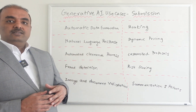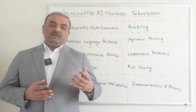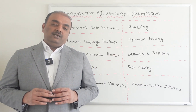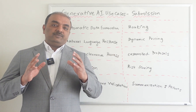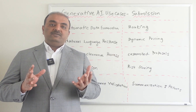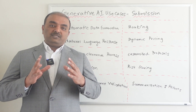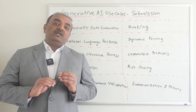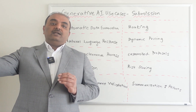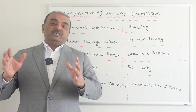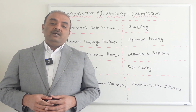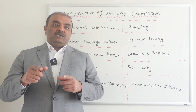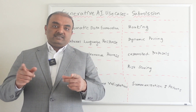Routing — similar to claims where we route the claim to the correct adjuster — even with respect to submission, when you have a submission which is a complex one, we can automatically route that submission to the underwriter who has expertise in that area, instead of somebody looking at it manually and then assigning to the correct underwriters.